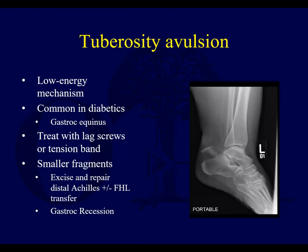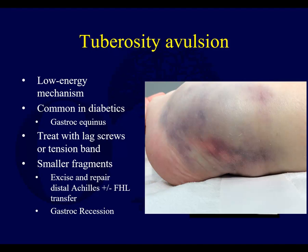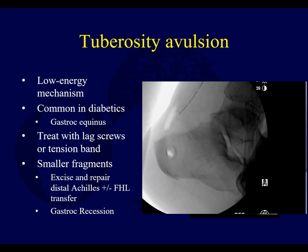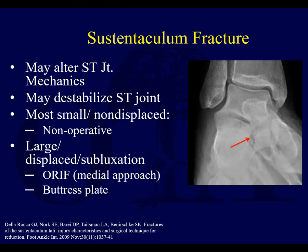Tuberosity avulsions can be treated with lag screws or tension band. Very small fragments can be treated with Achilles repair or advancement with FHL transfer if needed, plus gastroc recession to take tension off. You have to be cautious to make sure you don't have any skin problems posteriorly. Sustentaculum fractures are uncommon, but can destabilize the subtalar joint. Usually they're small and non-displaced, but if you have a large fragment, you may need to directly fix them from the medial side — potentially benefiting from a direct approach.